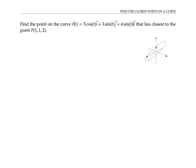Finding the closest point on the curve amounts to minimizing distance. I want to find the distance between a point on the curve, whose x coordinate, y coordinate and z coordinate are given here, and this point, whose x, y and z coordinates are given here. So I'll write down the distance formula.